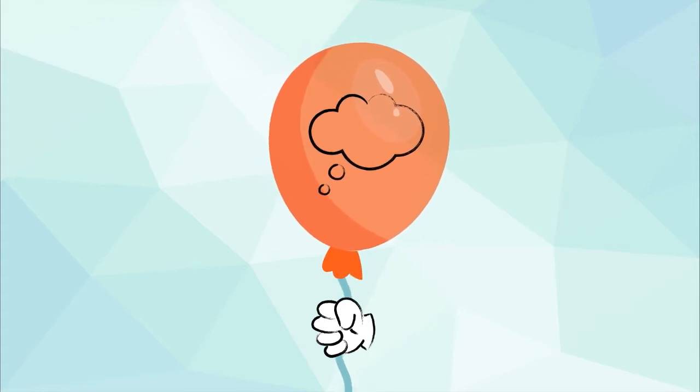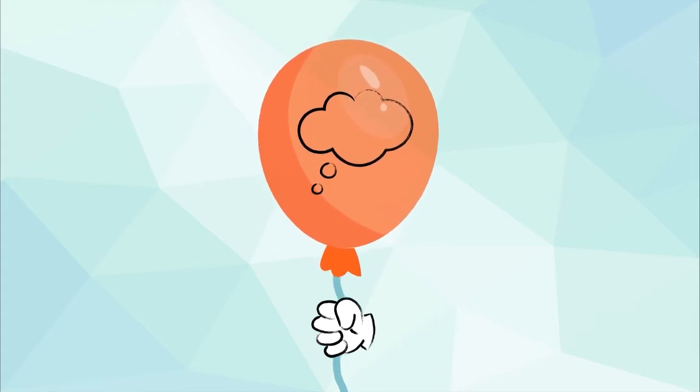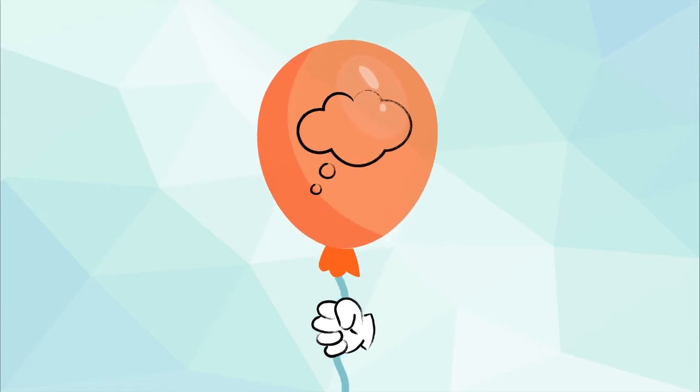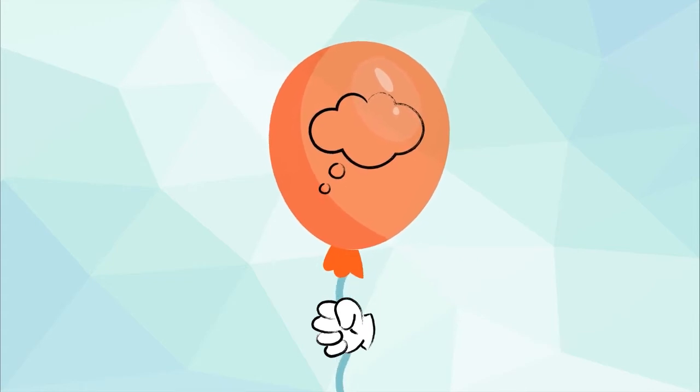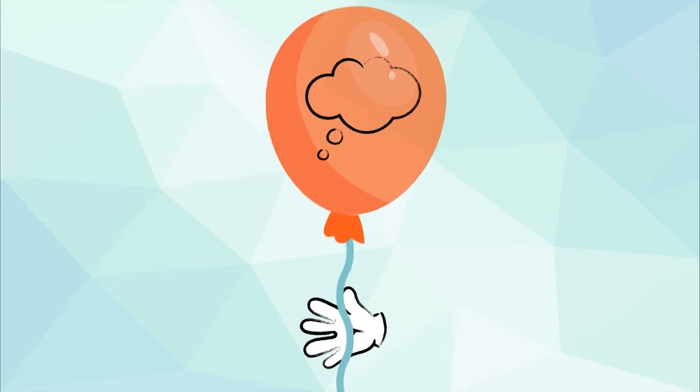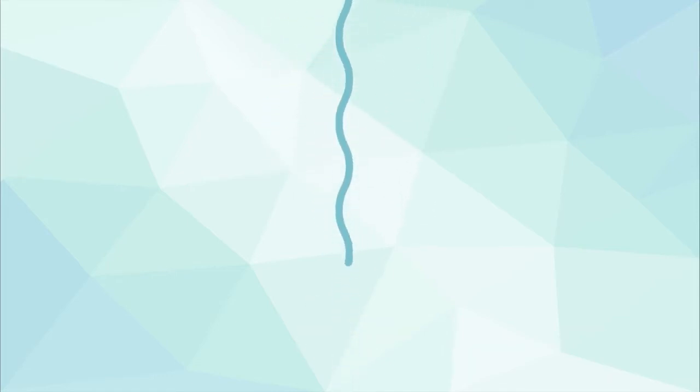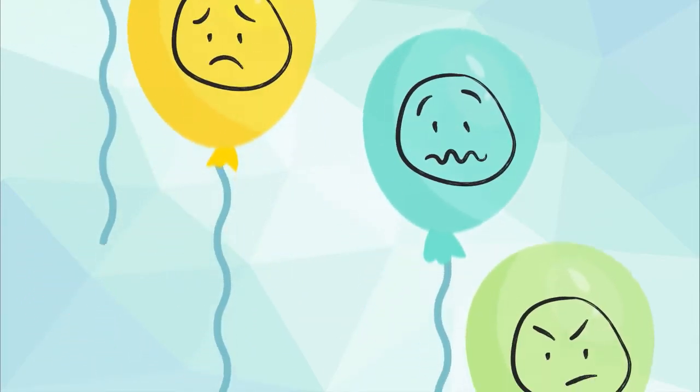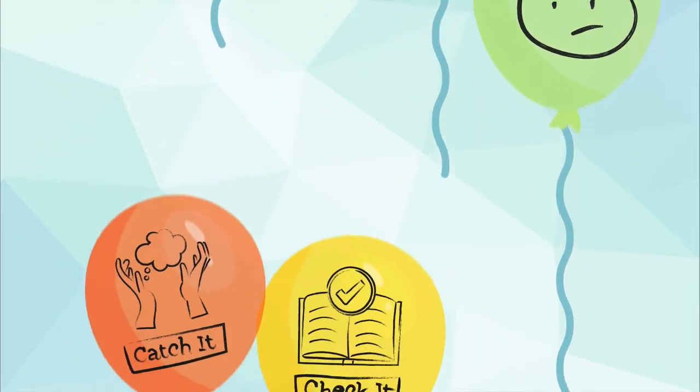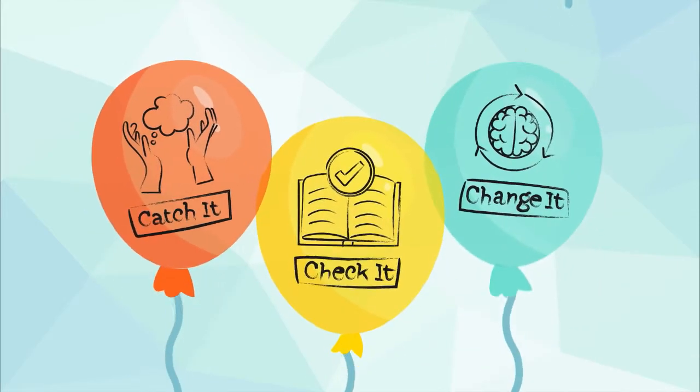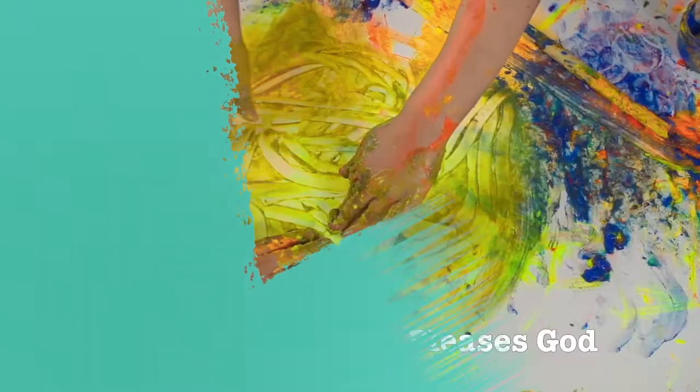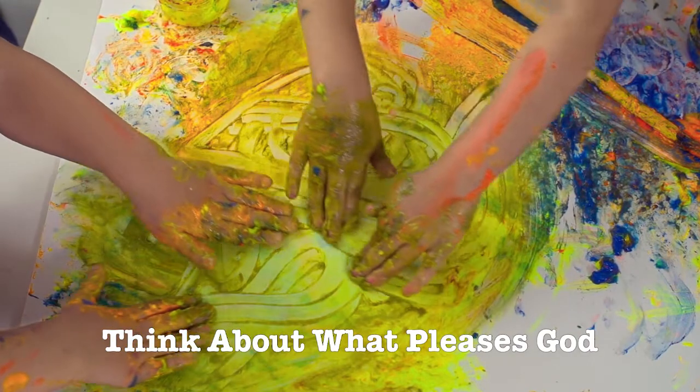Ask God to show you what you should be thinking about. Since you've talked to God about your thought, you can let it go now. Just open up your hand like you're letting go of the balloon. Great job! The next time you have a thought that makes you feel sad, worried, scared, or mad, this is one way you can catch it, check it, and change it. Think about what pleases God.